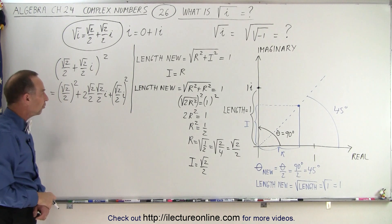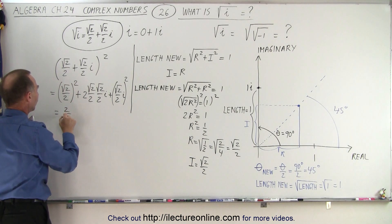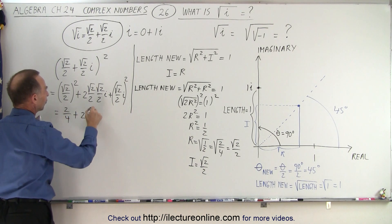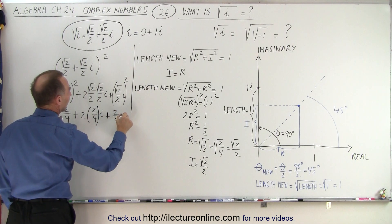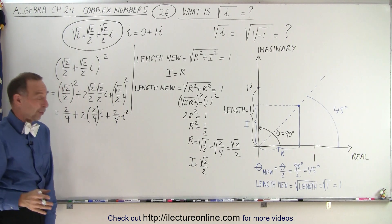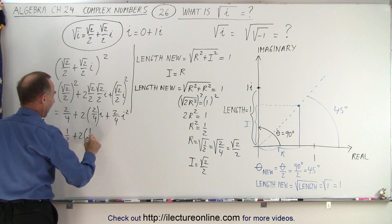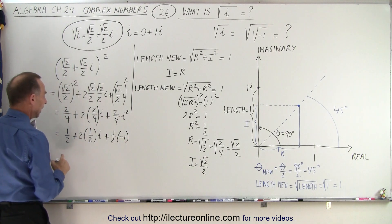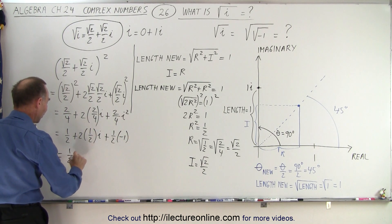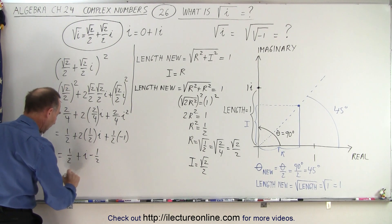Let's put a line there so we don't get confused. Now this here — when we square that — is equal to 2/4, plus 2 times 2/4 times i, plus 2/4 times i squared. Now of course 2/4 is the same as 1/2, so this can be written as 1/2 plus 2 times 1/2·i plus 1/2·i squared, which is negative 1. And then if we simplify this, this is equal to 1/2 plus i, because 2 times 1/2 is 1, minus 1/2, and notice that this will cancel that, and this is simply equal to i.